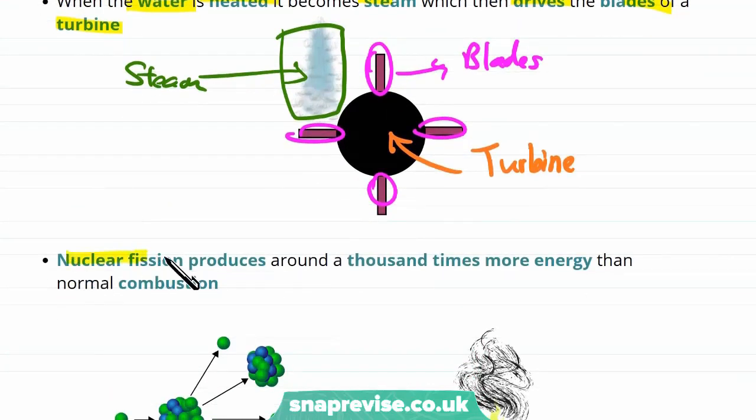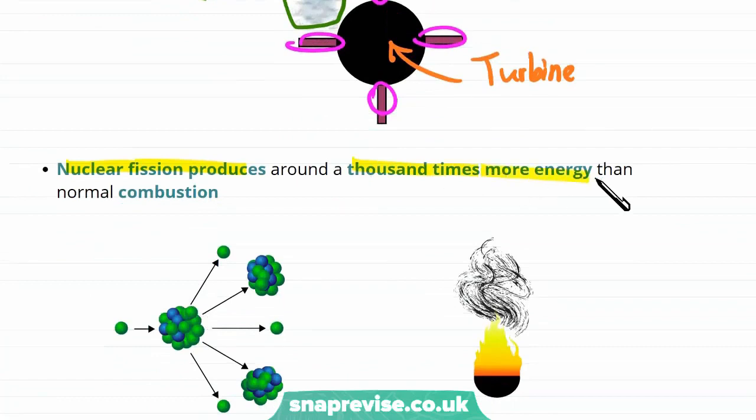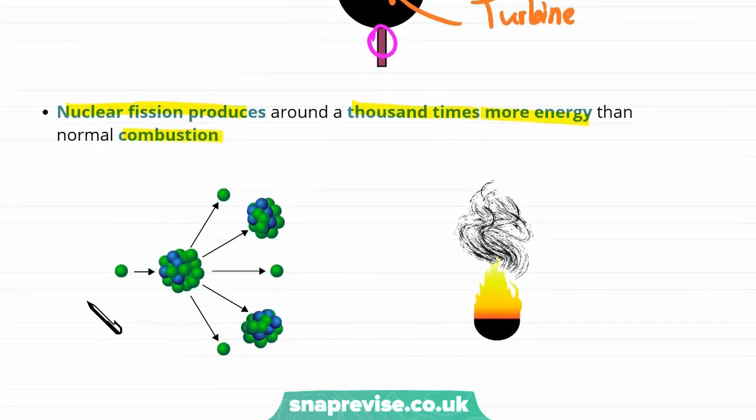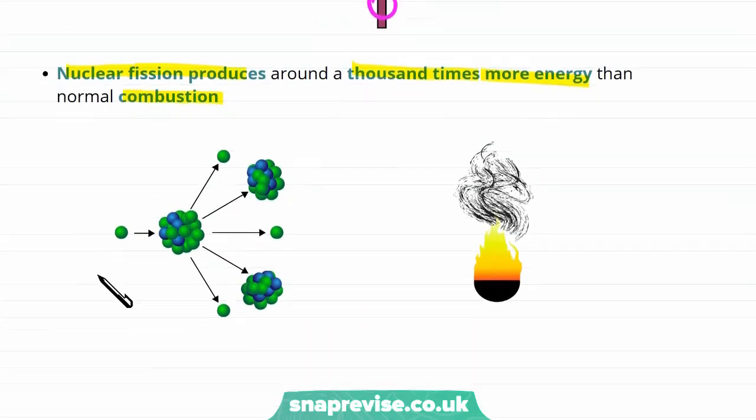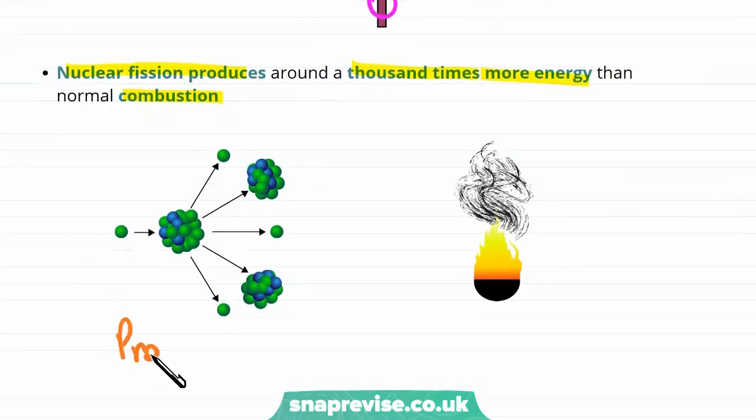Well, it turns out that nuclear fission produces around a thousand times more energy than normal combustion that we use in a coal power plant. So this fission produces much more electricity and it's a good way of creating a lot of electricity.